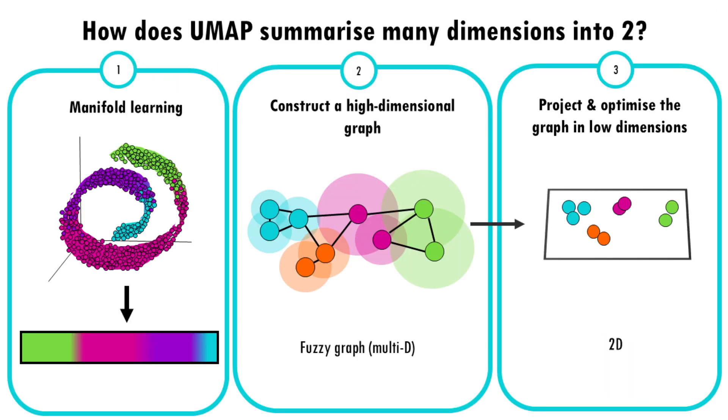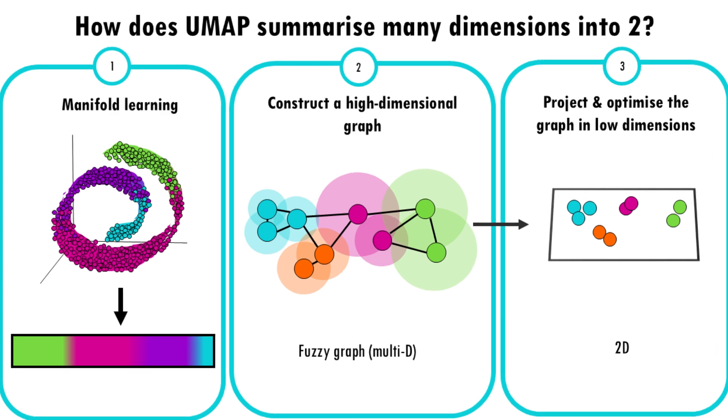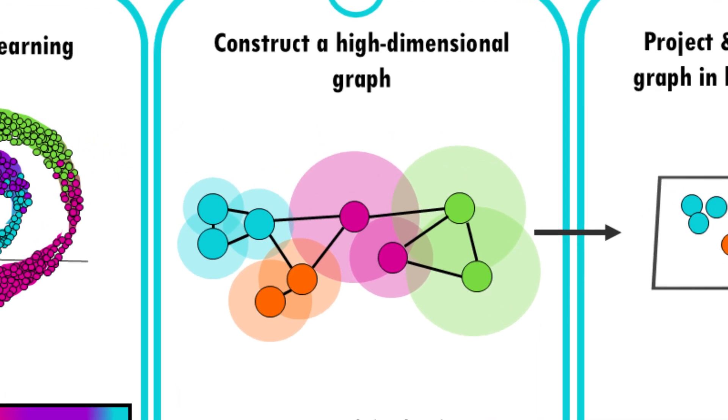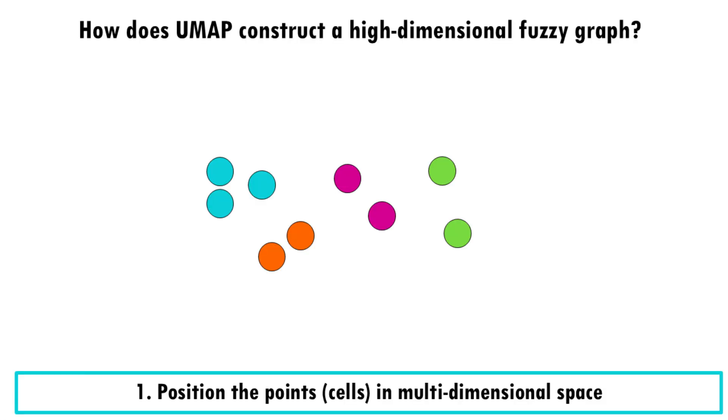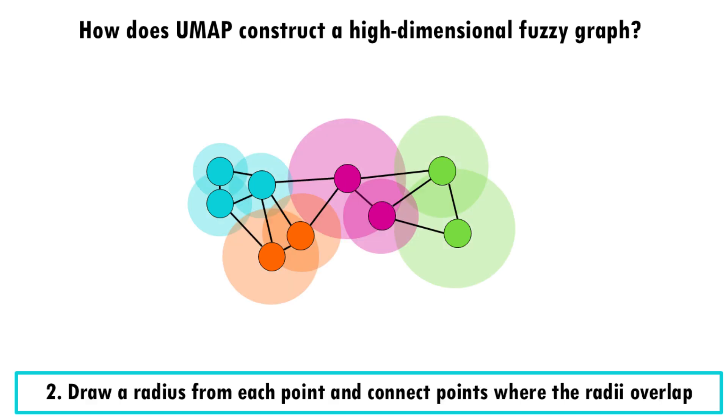So let's talk a bit more about that fuzzy graph. How does UMAP construct a high dimensional fuzzy graph? First, we position ourselves in the multi-dimensional space according to their expression of their 10,000 genes. Obviously, we cannot visualize this, but let's imagine it looks like this. Then UMAP basically draws a radius from each point or cell, and then connects points where there is an overlap.